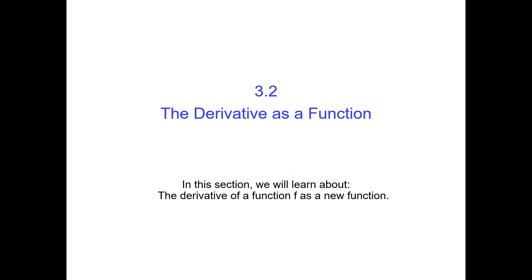We will still hold the basic, initial definition of the derivative — the limit definition — and the derivative is still the slope of the tangent line. The derivative represents the rate of change at one point, the instantaneous rate of change. That means nothing has changed; we will just look at this limit definition through a different lens.